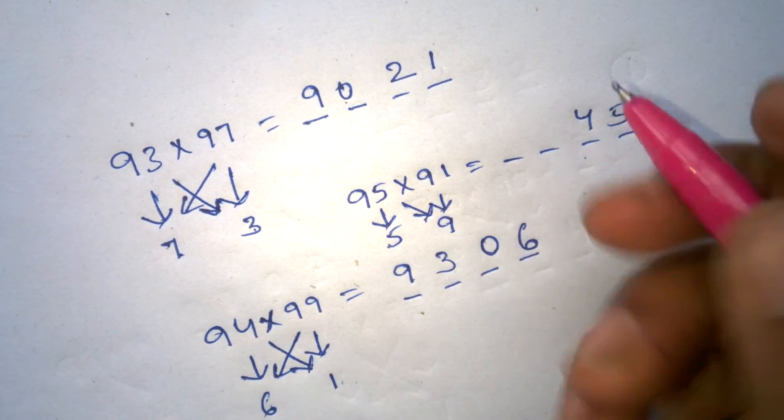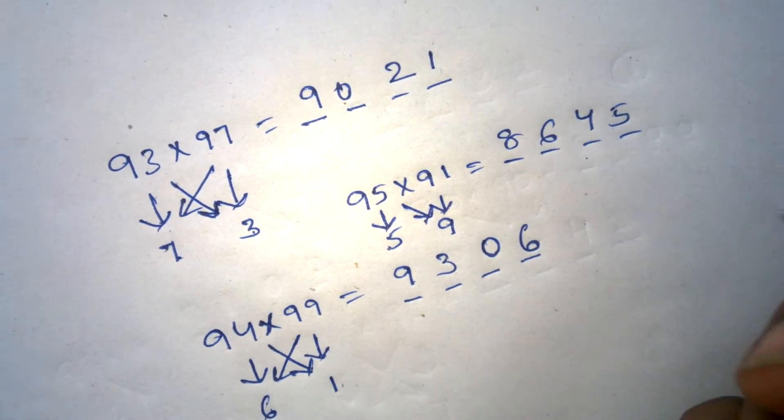95 minus 9 is 86. So the answer is 8645.